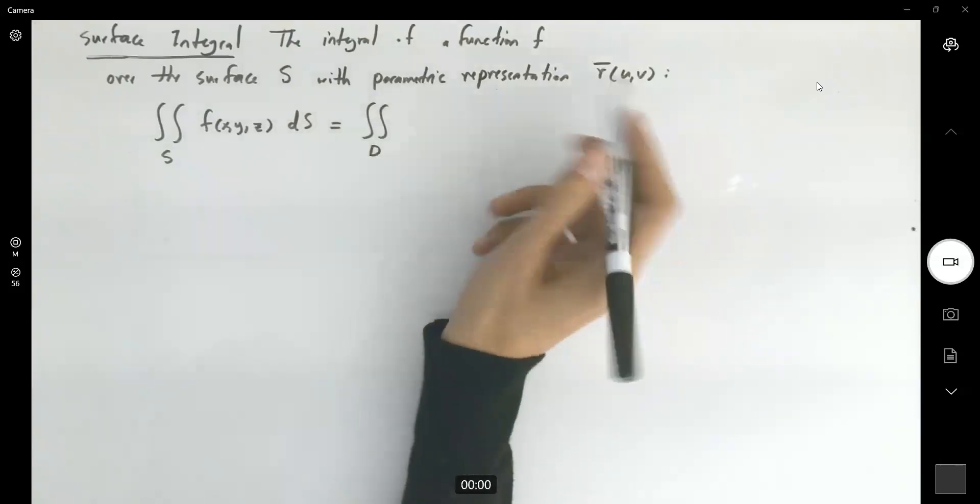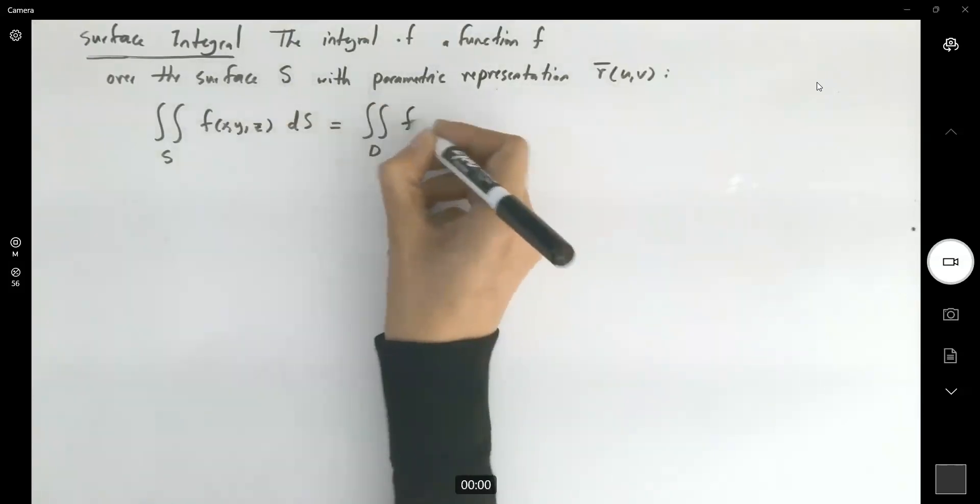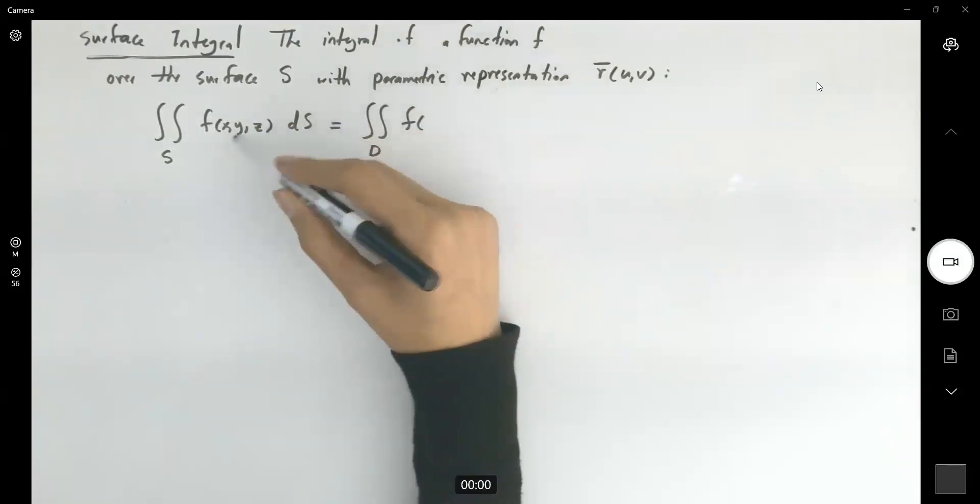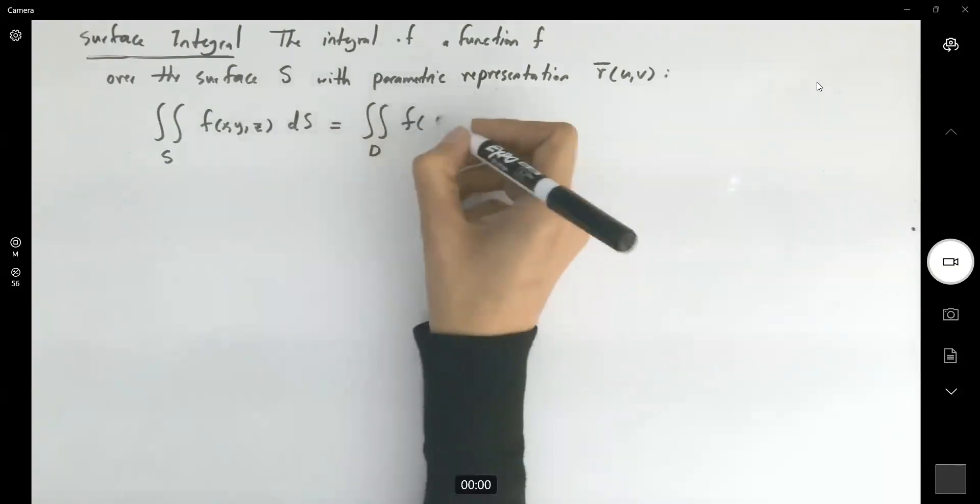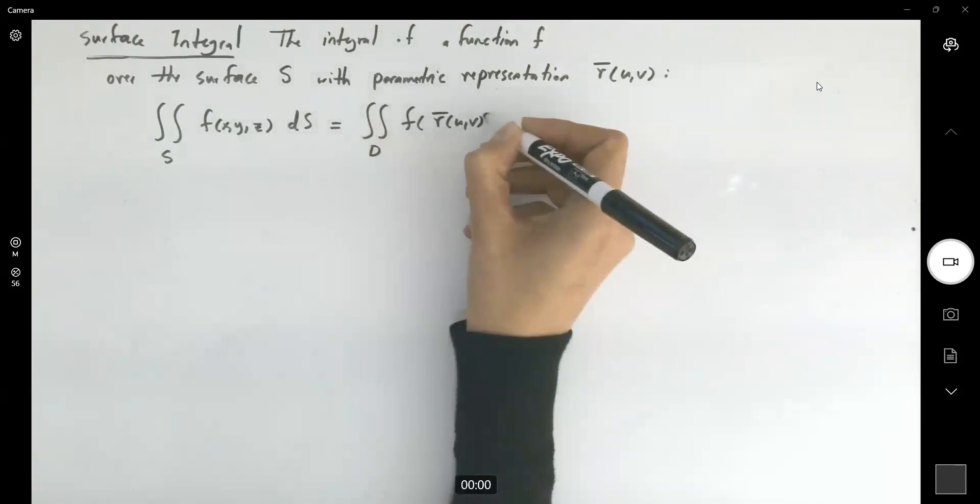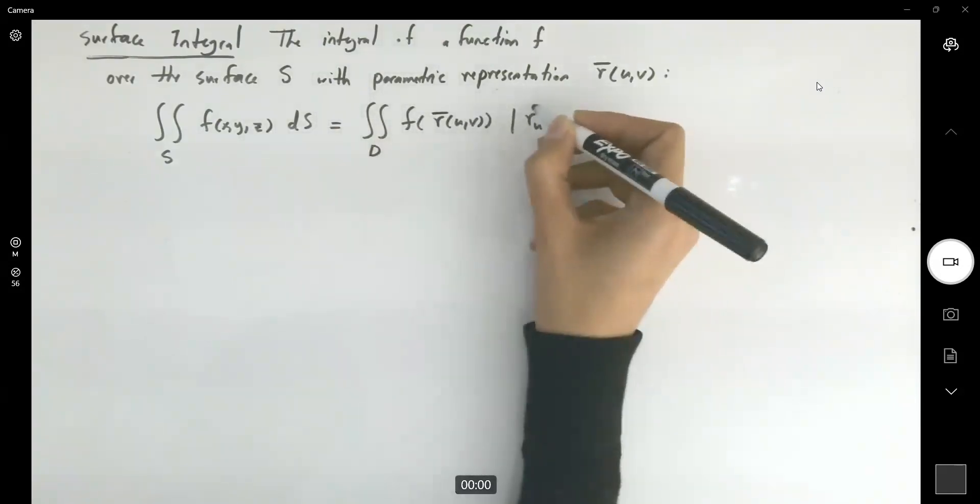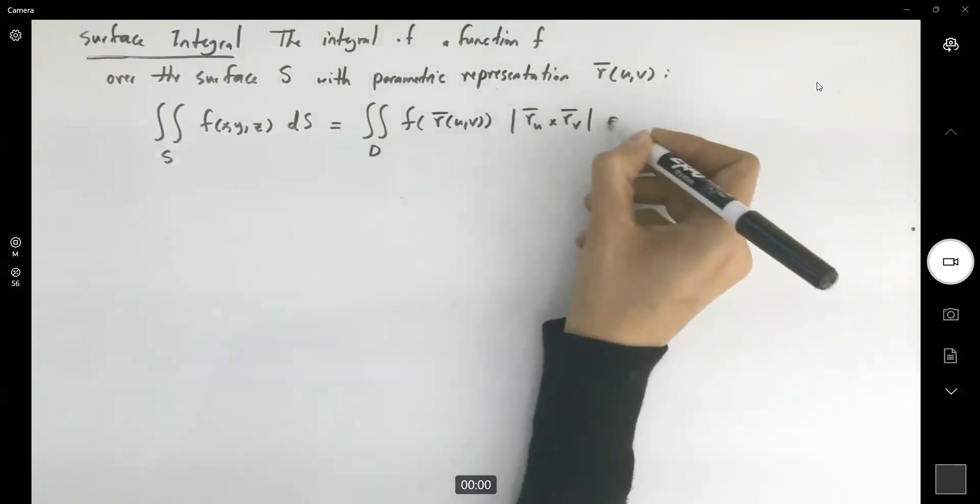You're going to substitute x, y, and z into the function f: x in u and v, y in u and v, z in u and v, or in general r of u and v, times the magnitude of the partial derivative of r with respect to u cross partial derivative of r with respect to v.